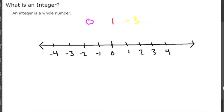You would mark zero here. One would be here. The negative three would be there.